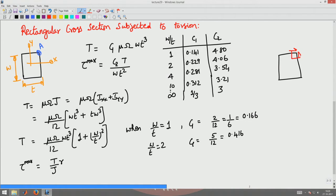If I take a section here and look at this sectioned element, there is no complementary shear coming here. This shear is not there, so there cannot be this shear too. This shear is not there, so this shear also cannot be there.